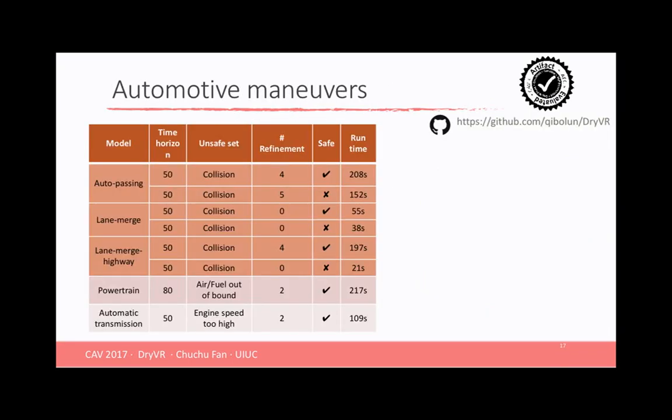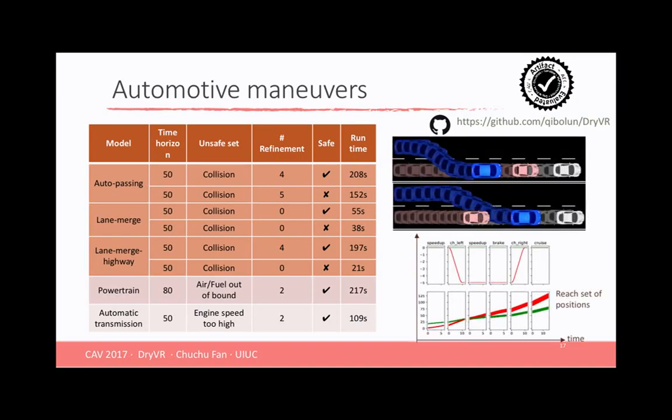So finally, I'm going to show you a few case studies. The first three rows are all different automotive maneuvers. You can see that if you have a black box for your vehicle as a vehicle simulator, you can easily construct different kind of transition graphs to describe your own scenario. For example, the auto passing, the merging on different roads, and even more complicated ones. Then you can use DRIVER to verify the safety of your scenario. You can also use DRIVER to visualize the reach set of your system. For example, all possible positions of your vehicle.